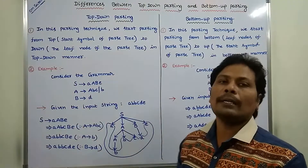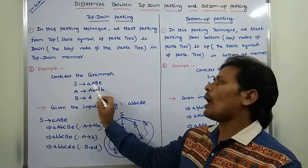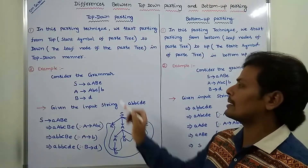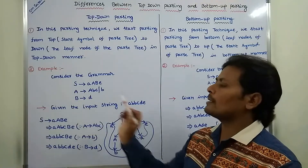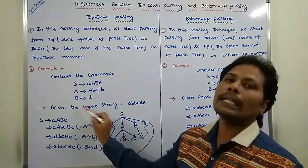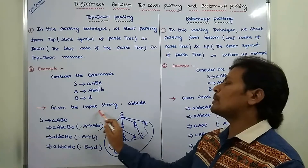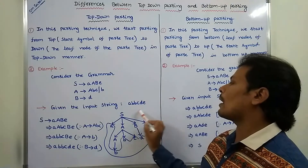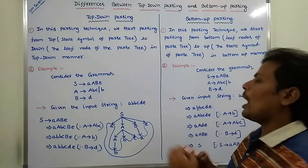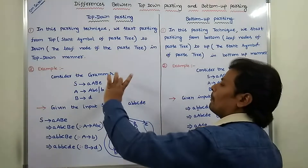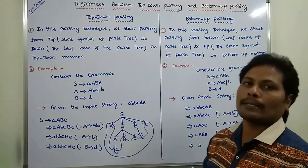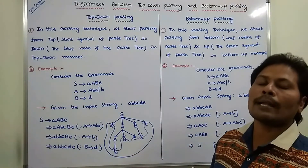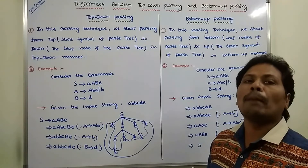Now consider this grammar: S = a A B e; A = A b c, or b; B = d. This is the given grammar. The input string to derive from this grammar is a, b, b, c, d, e — all are terminal symbols. We have to derive this string by using this grammar, using top-down parsing. We start from capital S, because top-down parsing starts from the start symbol of the parse tree.